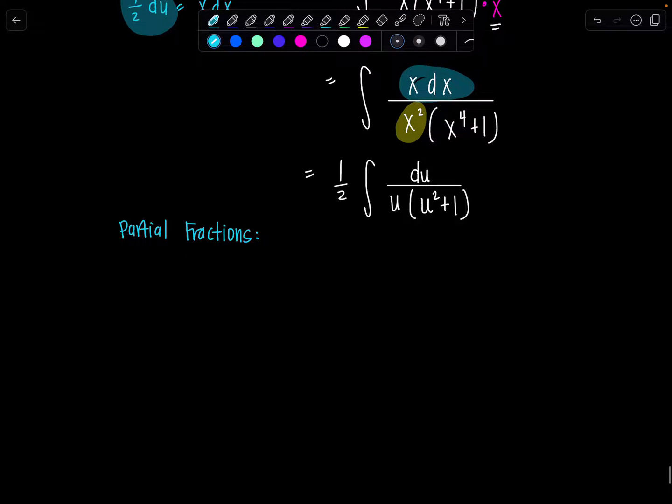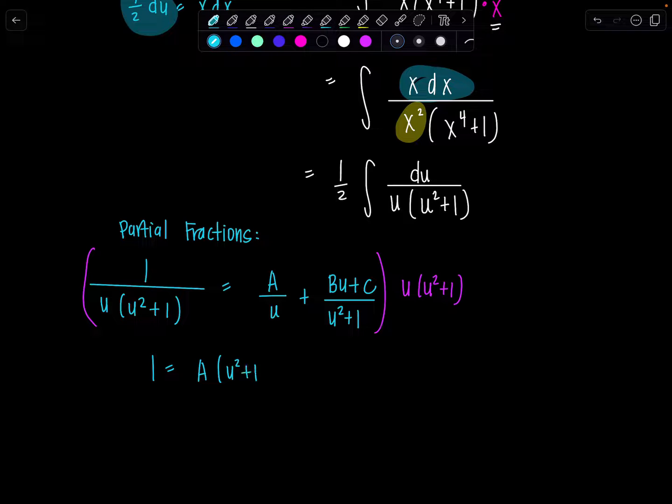So the integrand is 1 over, I'm going to leave the 1 half outside, okay? We don't need it. u times u squared plus 1. I'm going to have A over u plus, since u squared plus 1 is an irreducible quadratic, I need Bu plus C upstairs. And then in the next step, you multiply through by the LCD, which is u, u squared plus 1. And then I'm going to be left with 1 equals A times u squared plus 1 plus Bu plus C times u.